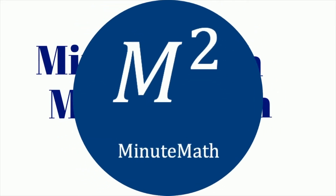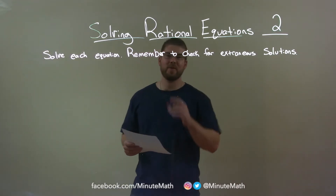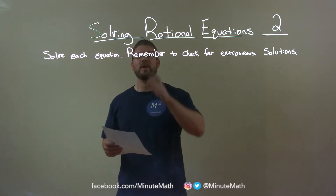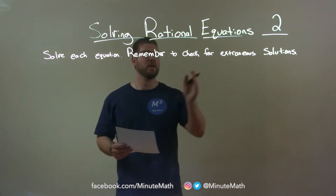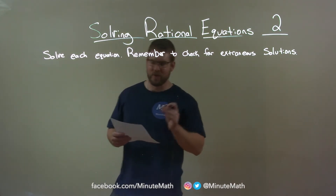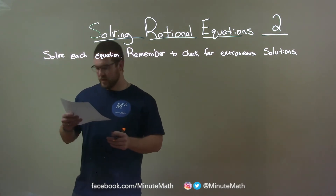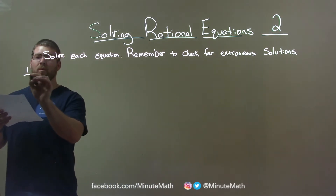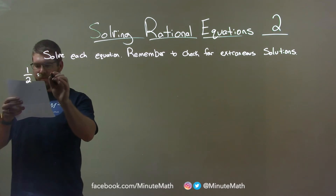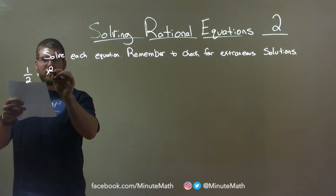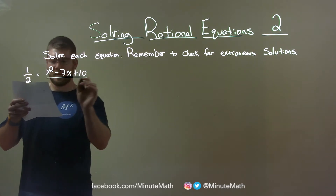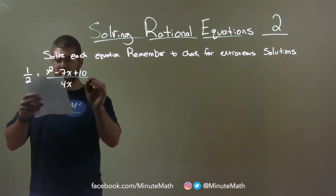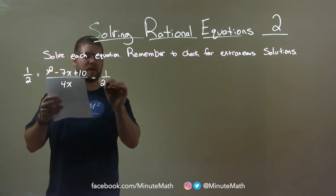When you need help, you use Minute Math. Hi, I'm Sean Gannett and this is Minute Math. Today we're learning about solving rational equations. Solve each equation and remember to check for extraneous solutions. If I was given this problem: one half is equal to x squared minus 7x plus 10, over 4x, minus 1 over 2x.